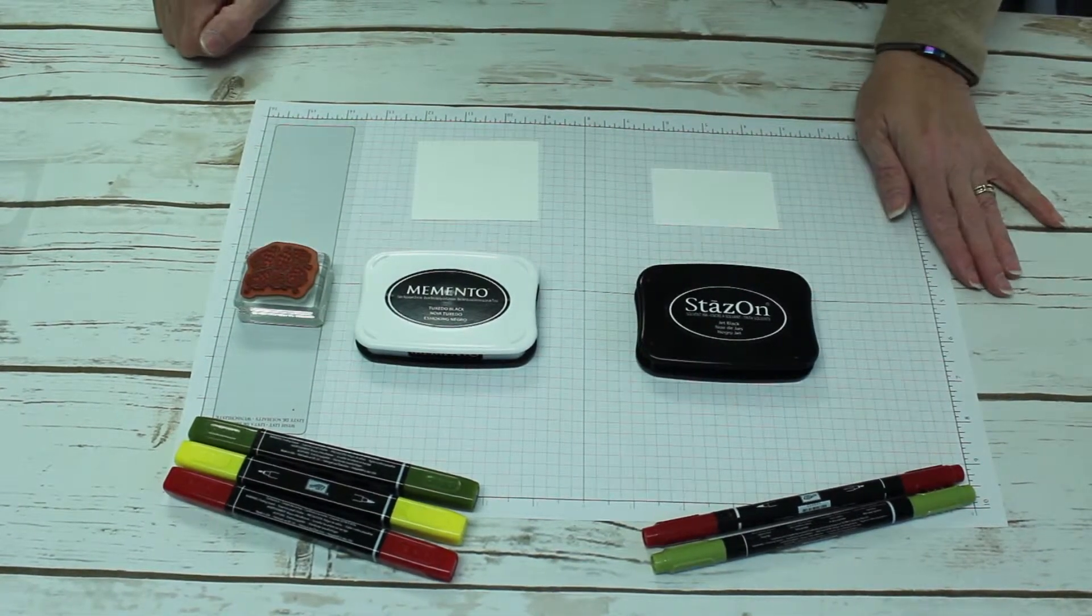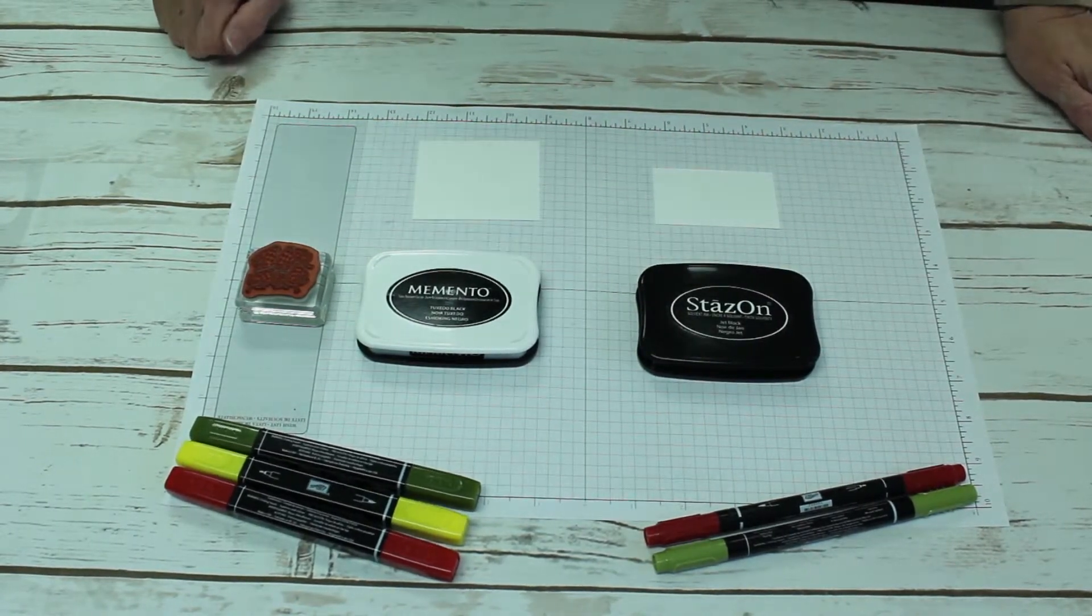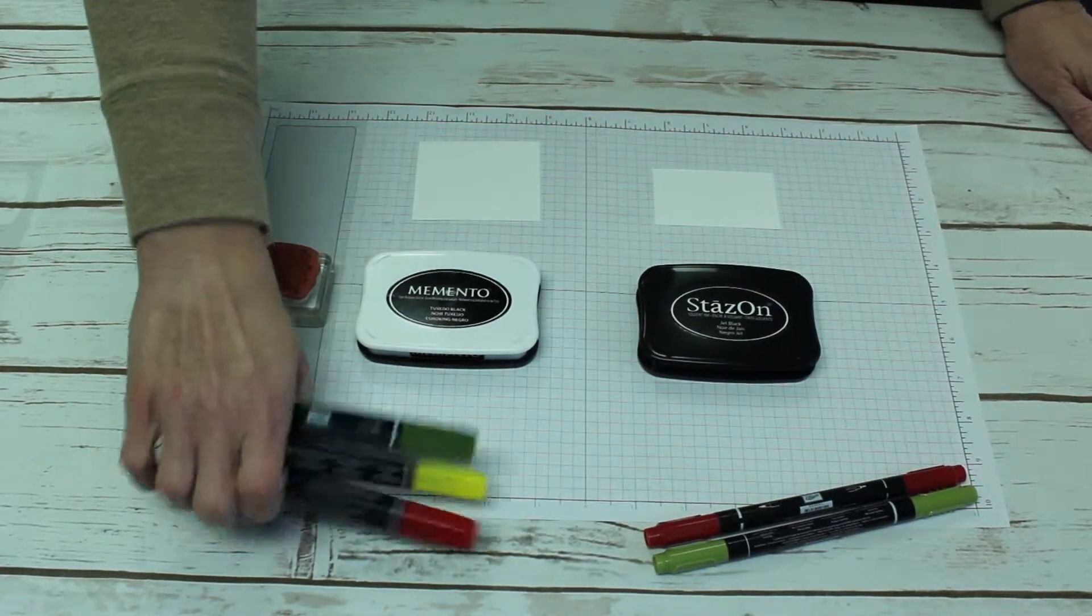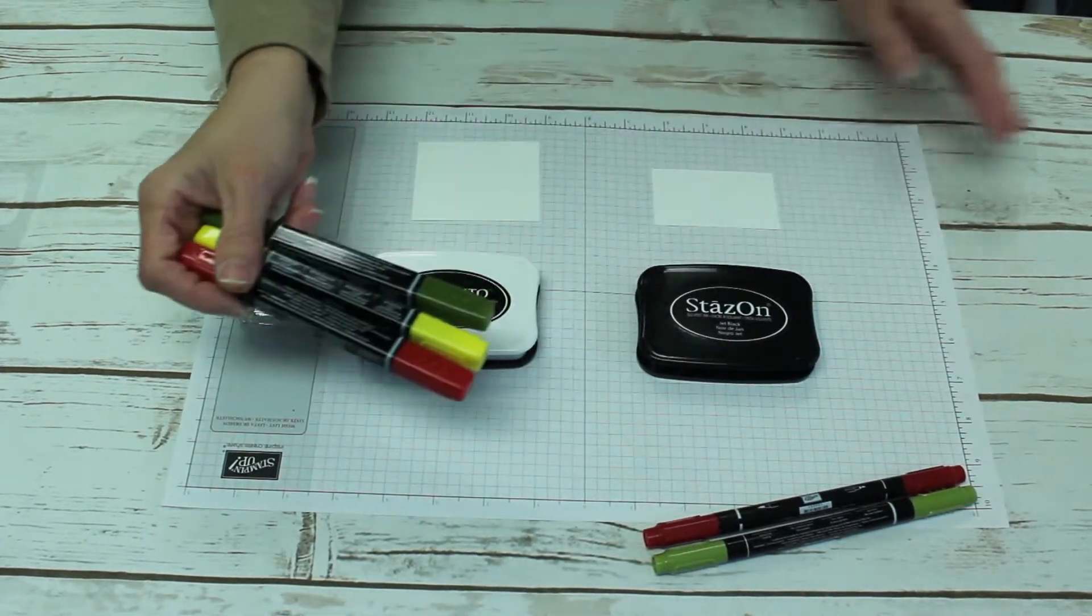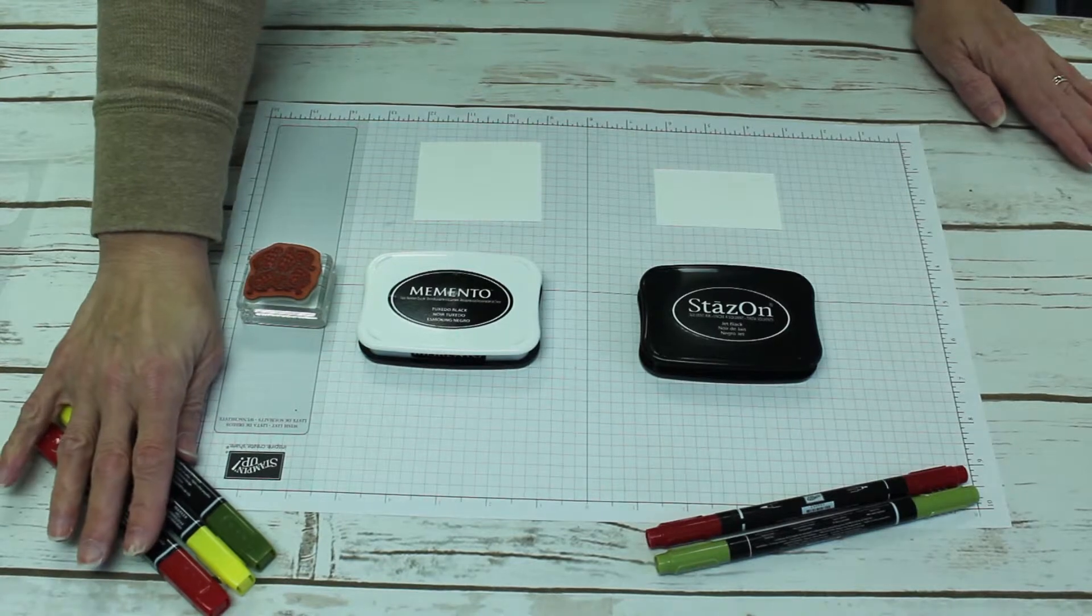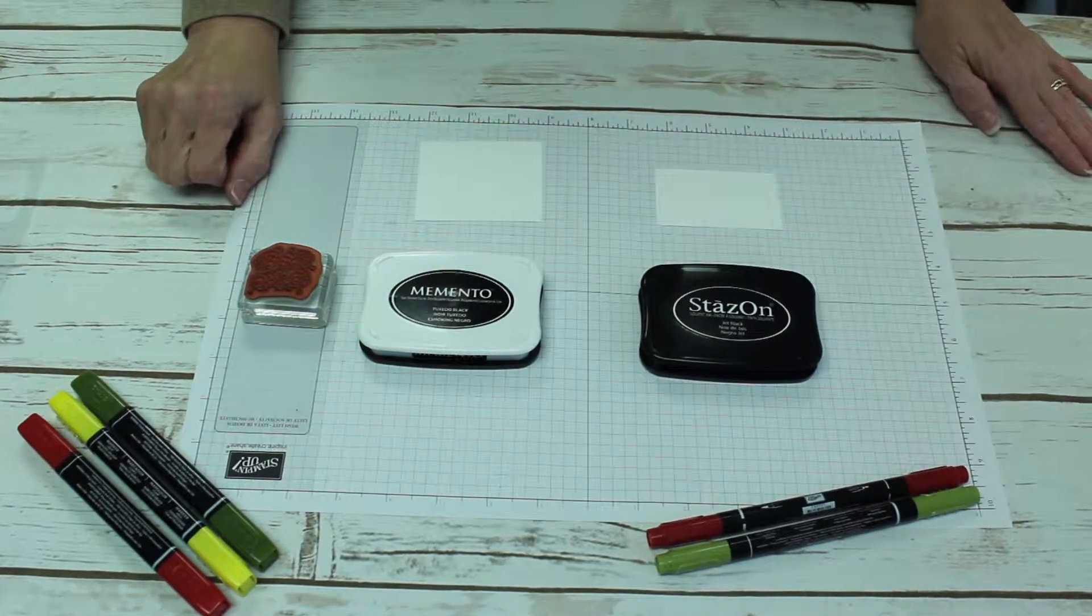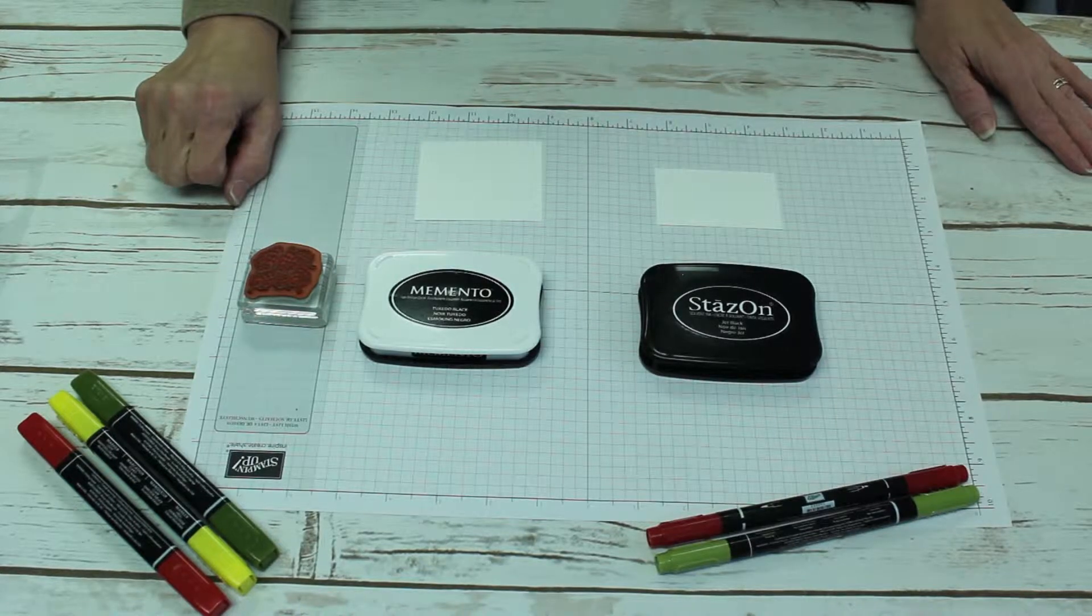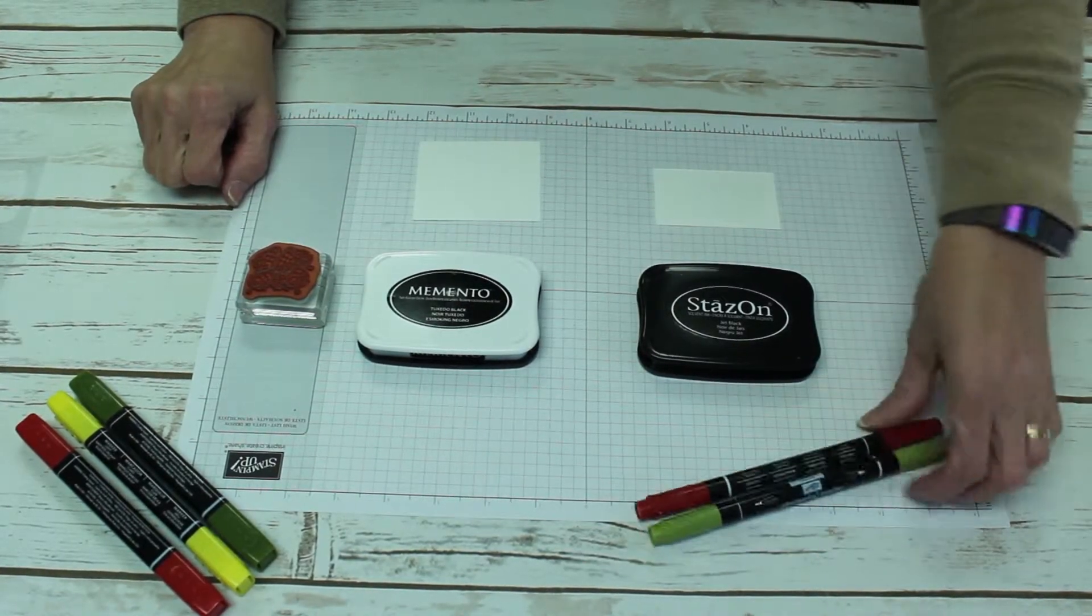However, the one time you would not use StazOn ink is when you want to use alcohol ink markers. When you use alcohol ink with StazOn, the combination of the solvent and the alcohol will bleed together and make a muddy mess. However, if you want to use Stampin' Up! water-based markers, StazOn ink is the perfect match.